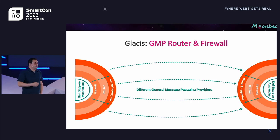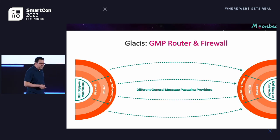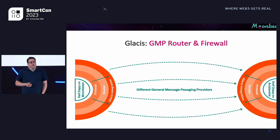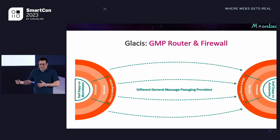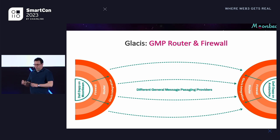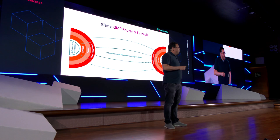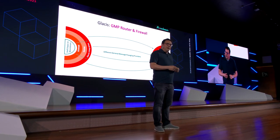One area we've been working on is the concept of a router or firewall for cross-chain messaging. If GMP providers are like the networking providers — the AT&T, Verizon, Telefonica — they're providing the transport. The question is how do you provide logic across multiple of them? It's analogous to a Cisco router in the networking world, where the GMPs plug into a protocol that lets you express different routing logic. We're seeing multiple teams recreate this wheel — engineering the same functionality into their own contracts — and that pattern suggests a shared protocol is needed.